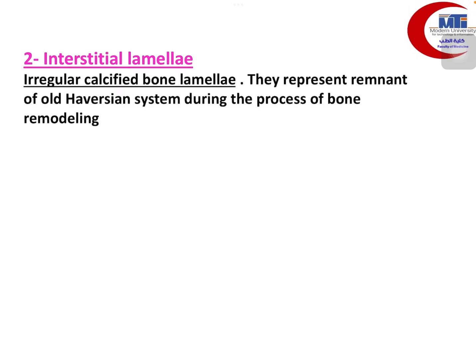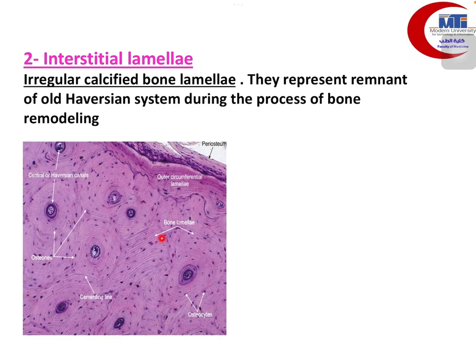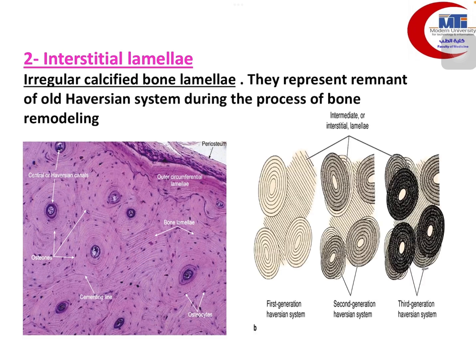The interstitial lamellae are formed of irregularly arranged calcified bone lamellae that are remnants of old Haversian systems subjected to the process of remodeling, entrapped between new Haversian systems. In the intermediate zone, new Haversian systems and irregular interstitial lamellae running in various directions — not in a circular manner — can be clearly seen.